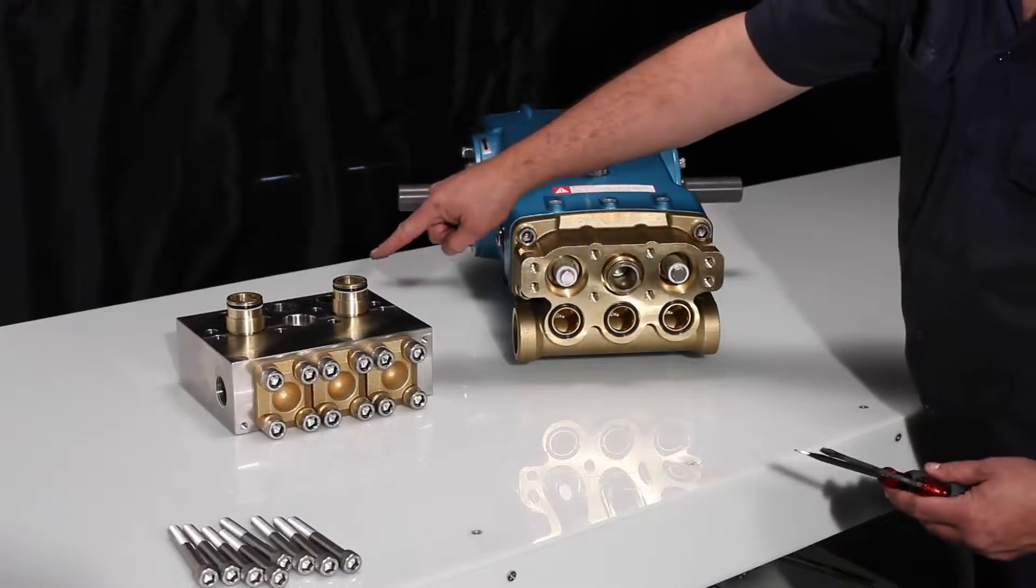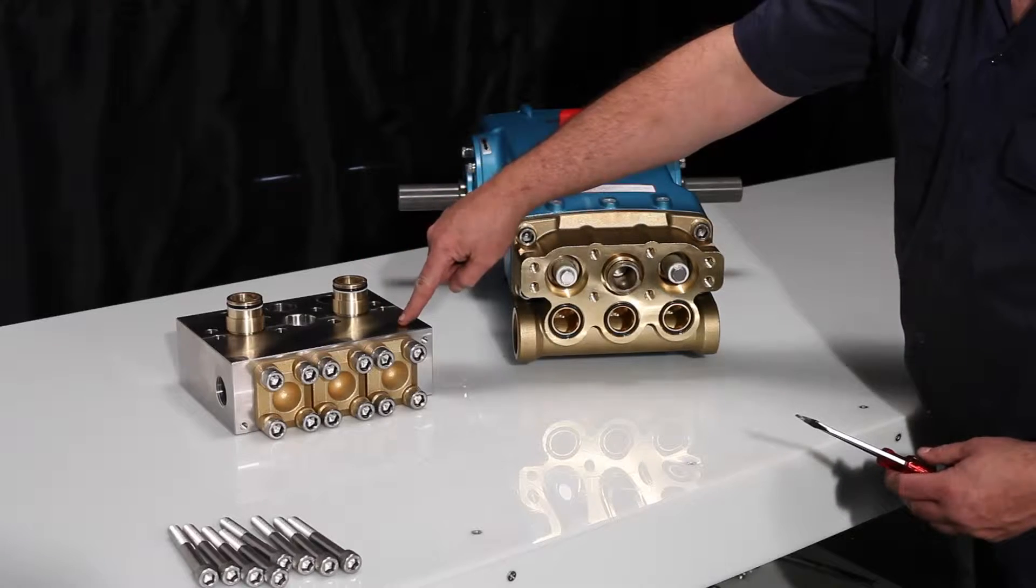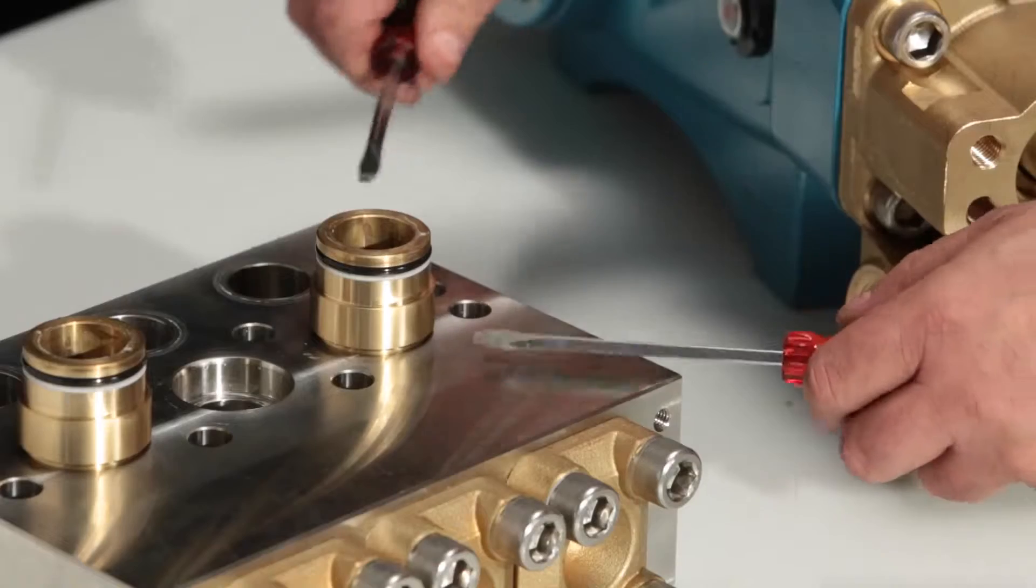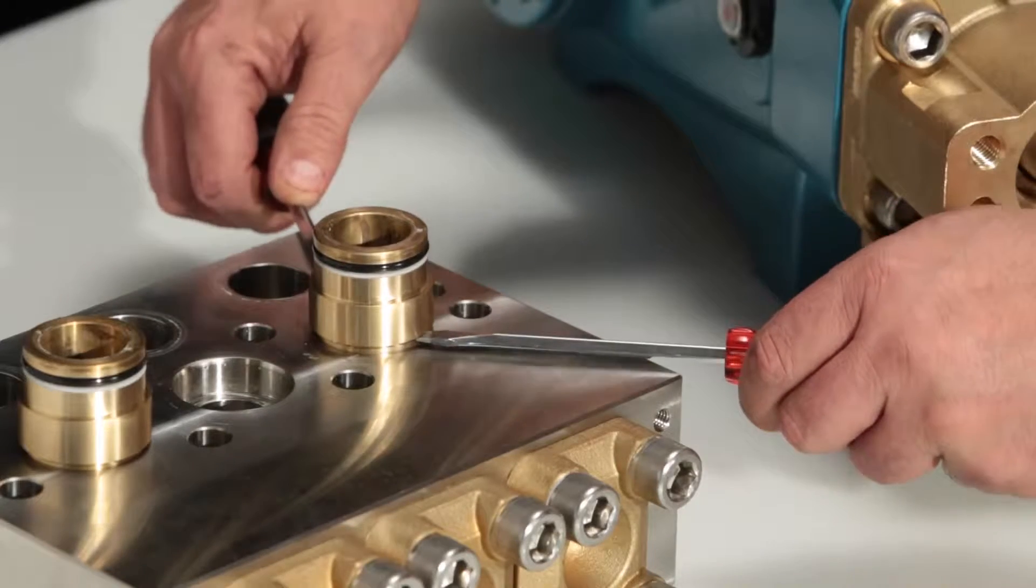The VPacking spacers may or may not stay in the discharge manifold during removal. To remove the adapter from the discharge manifold, use two screwdrivers to pry it away from the manifold.